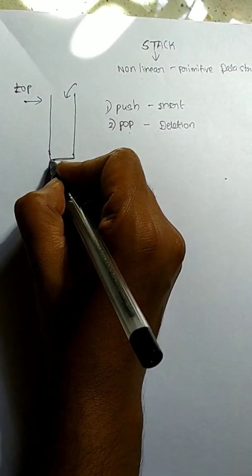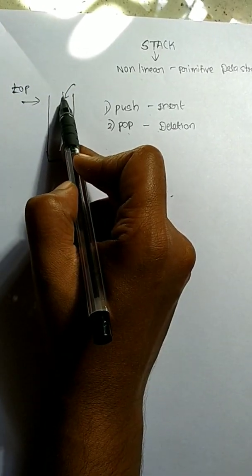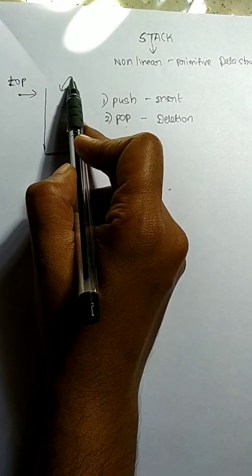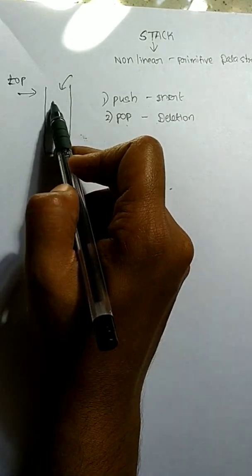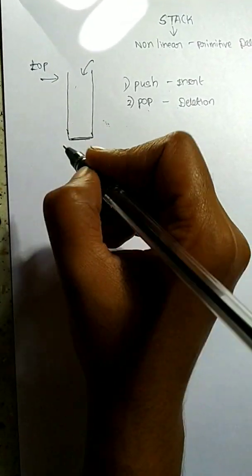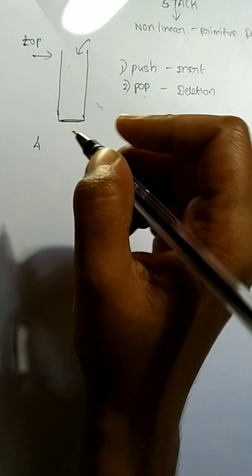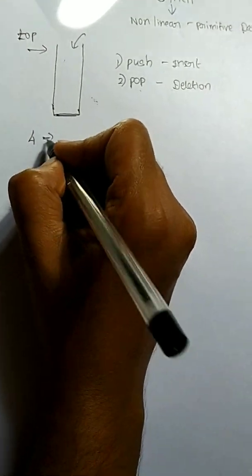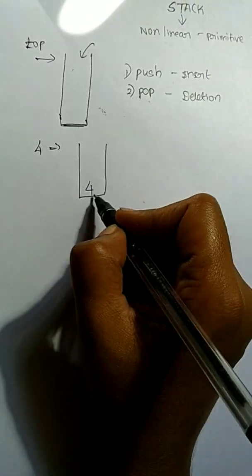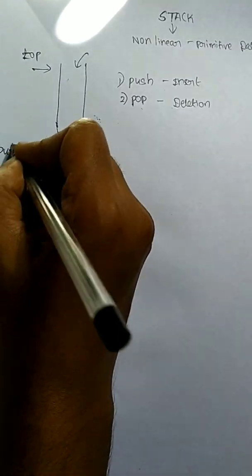One end of the stack is closed; only one end is open. The push and pop operations are both done only at one end. If I am inserting, first I am inserting an element 4 inside my stack. It will be inserted at the bottom. This is push 4.